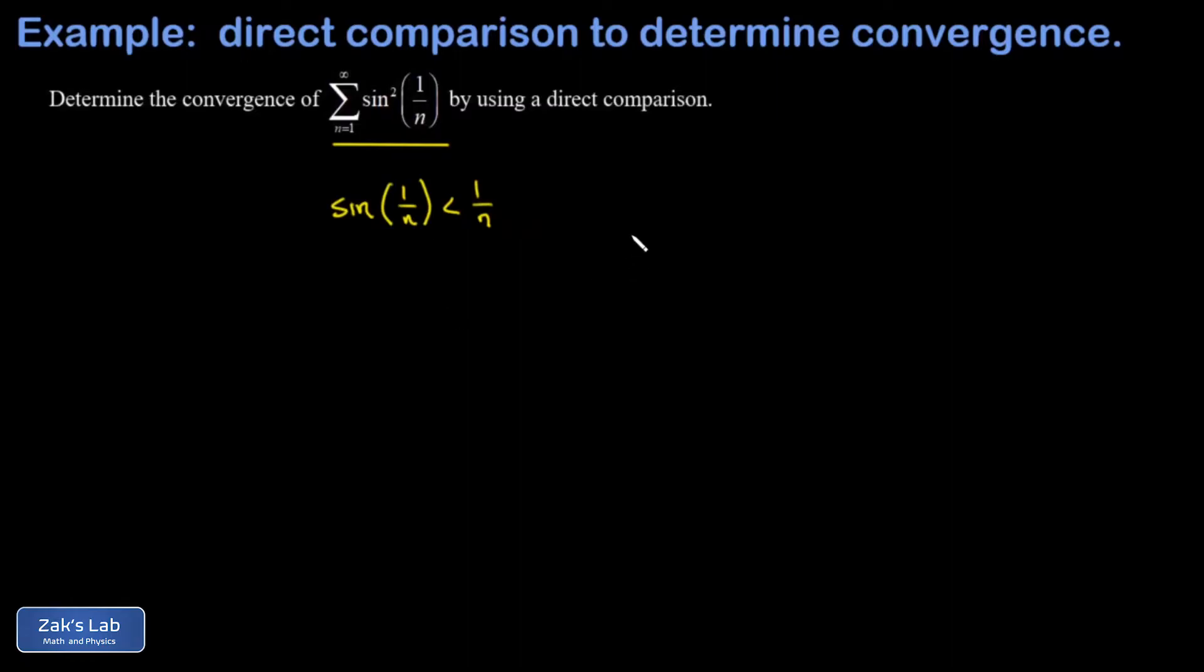Well, if the sine of 1 over n is less than 1 over n, I can square both sides of this. And I find out that sine squared 1 over n is less than 1 over n squared.